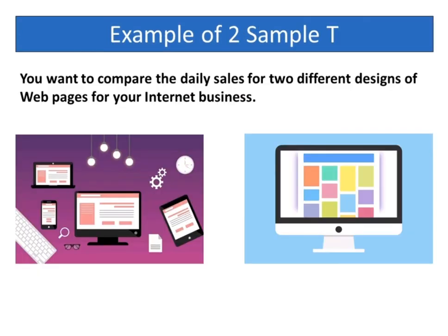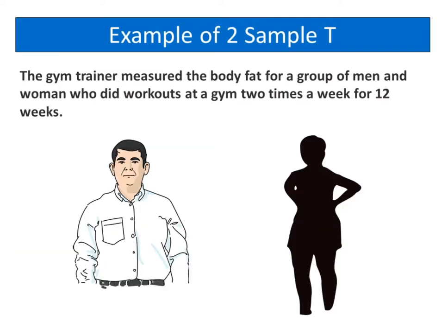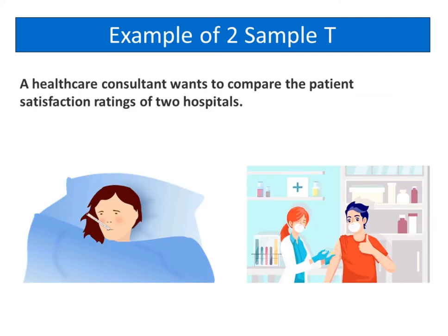Let's take an example. You want to compare the daily sales for two different designs of web pages for your internet business. Another example is the gym trainer measured the body fat for a group of men and women who did workouts at a gym two times a week for 12 weeks. A healthcare consultant wants to compare the patient satisfaction ratings of two hospitals. The hospitals are independent samples as measurements for the first hospital does not affect measurements for the second hospital.